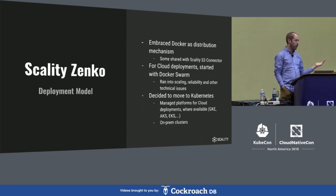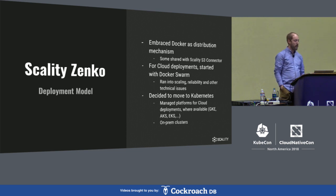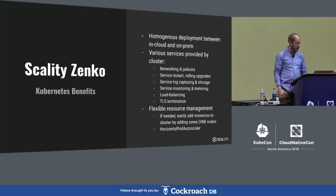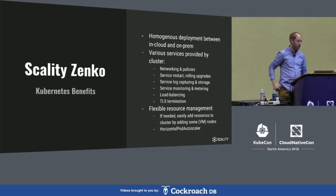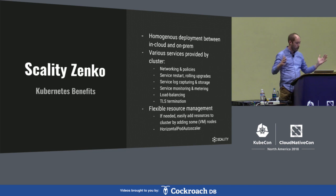We moved to Kubernetes both using the managed Kubernetes offerings which already existed back then on Google and on Azure, then later Amazon EKS once it became actually available, and on-prem for our customers who want to deploy the solution in their data centers. The benefits we wanted and did reap from Kubernetes were primarily the homogeneous deployment between cloud and on-prem, because Kubernetes becomes kind of the platform — the operating system, so to speak — of everything.